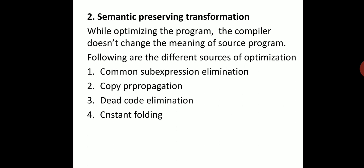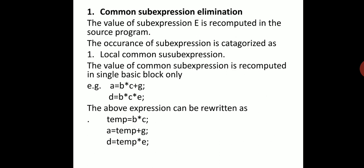Now, the following are the different sources of optimization — what we can optimize in the program. There are four things: first, common sub-expression elimination; second, copy propagation; third, dead code elimination; and fourth, constant folding.